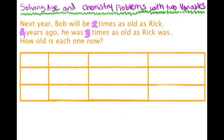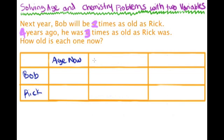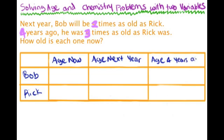Our first problem: next year Bob will be two times as old as Rick; four years ago he was three times as old as Rick was. How old is each one now? On the left we put the names — Bob and Rick. For the first column we want to know the age now, the second column the age next year, and the third column the age four years ago.